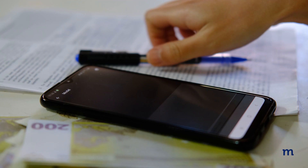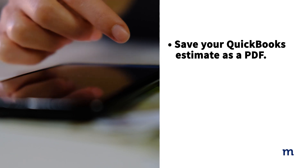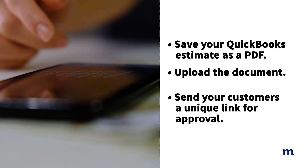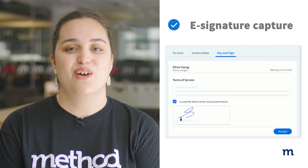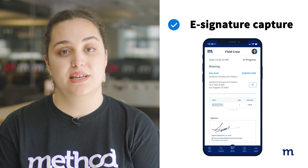The second solution revolves around electronic signature software. This is a great option for businesses that need a signature but don't want the hassle of printing, faxing or scanning documents. Simply save your QuickBooks estimate as a PDF, upload the document and send your customers a unique link for approval. Popular electronic signature software solutions include DocuSign or WriteSignature. Method also offers digital signature capture, helping you collect customer signatures directly on the estimate to eliminate the additional back and forth. This feature comes at no extra cost for all Method users.